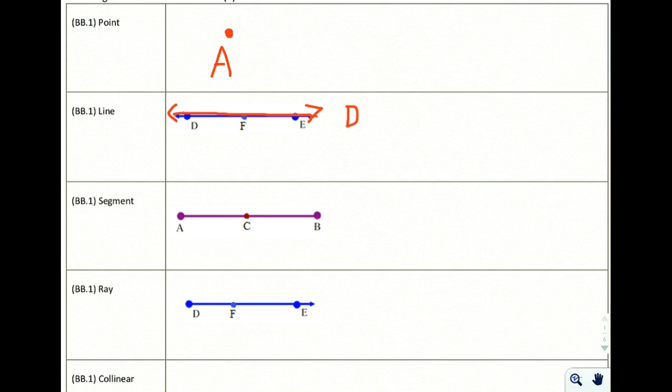So for example, line DE would be an acceptable name. We put this little symbol above it. We could also call it ED. And we could call it FE and use all the other combinations of two letters in either order to define a line.